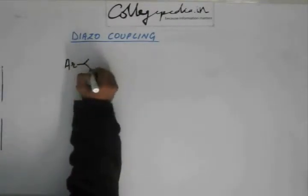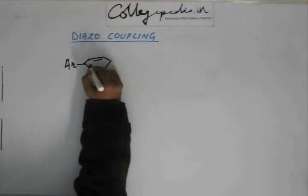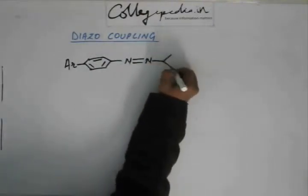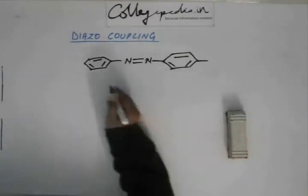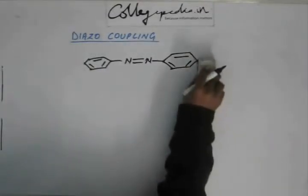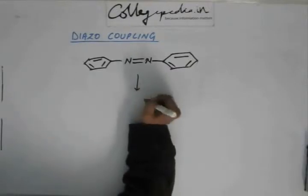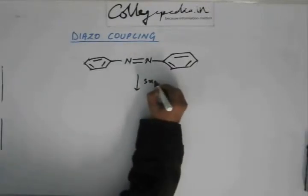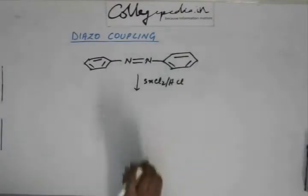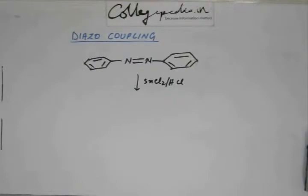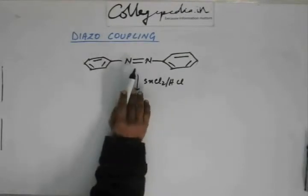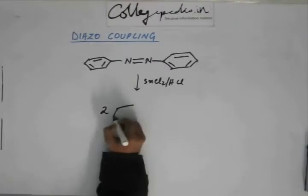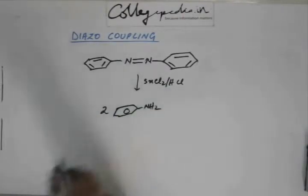Once you have an azo compound like this, if we reduce it — suppose we carry out the reduction using SnCl2 and HCl — then this pi bond is going to be reduced, and SnCl2/HCl is going to carry out the reduction to the second sigma bond as well. So we will end up with 2-aniline basically.